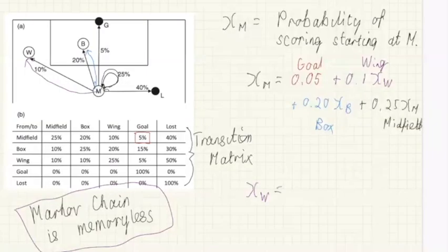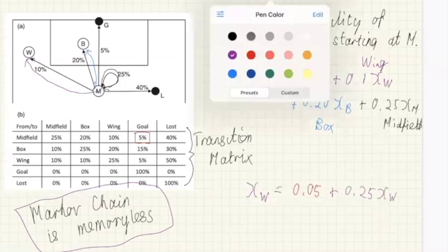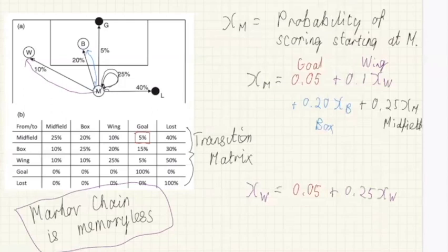We can write down similar probabilities for what happens on the wing. x_w is the probability of scoring starting on the wing: the probability of scoring a goal directly is also 0.05, the probability of staying on the wing is 0.25, the probability of moving to the box is 0.10, and the probability of moving to midfield is also 0.10.